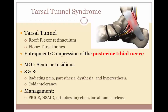Tarsal tunnel syndrome, also known as posterior tibial neuralgia, is a compression neuropathy and painful foot condition in which the tibial nerve is compressed as it travels through the tarsal tunnel. This tunnel is found along the inner side of the leg behind the medial malleolus. The posterior tibial artery, tibial nerve, and tendons of the tibialis posterior, flexor digitorum longus, and flexor hallucis longus muscles all travel in a bundle through this tarsal tunnel. Patients typically complain of numbness in the foot radiating to the big toe and first three toes, as well as pain, burning, and tingling over the base of the foot and heel. Inflammation within this tunnel can increase pressure on the nerve, decreasing blood flow and producing altered sensation.